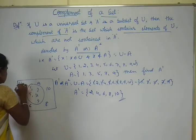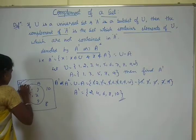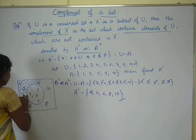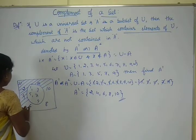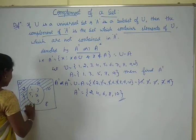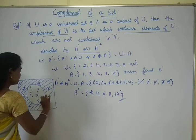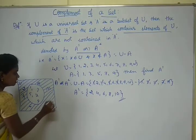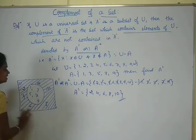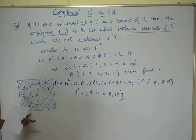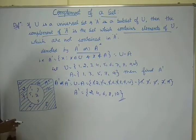For A complement, you have to shade the region outside the circle only. Complement means the elements which are present in the universal set but not in A. So the shaded region represents A complement — the complement of the set A. This is the Venn diagram for this set.